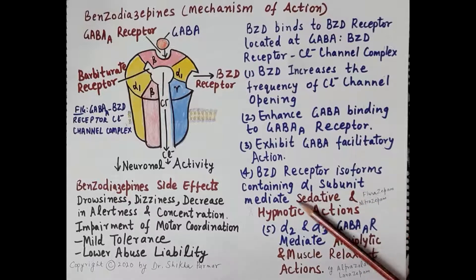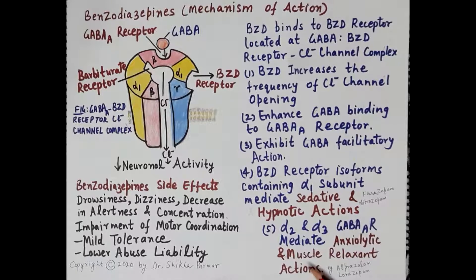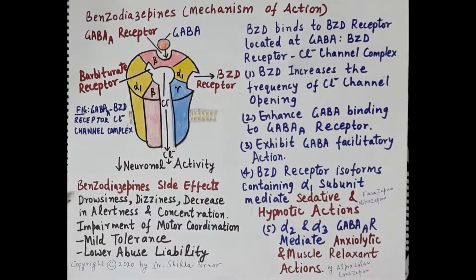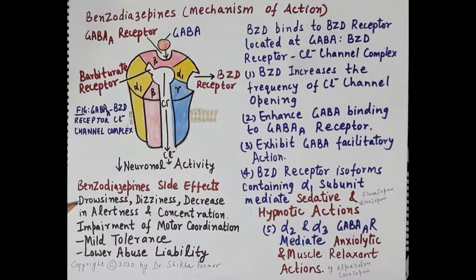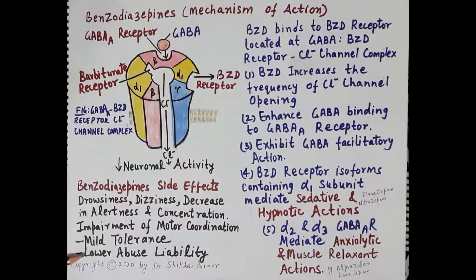Benzodiazepines with higher affinity for GABA-A receptors with the alpha-1 subunit mediate sedative and hypnotic actions — for example, flurazepam and nitrazepam used for insomnia. Those with higher affinity for alpha-2 and alpha-3 GABA receptors exhibit anxiolytic and muscle relaxant actions — for example, alprazolam and lorazepam. Side effects include drowsiness, dizziness, decreased alertness, impairment of motor coordination. Tolerance and abuse liability are less compared to barbiturates, but are still present.